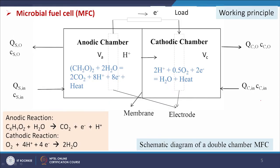First we will discuss microbial fuel cells. This diagram shows the working of the microbial fuel cell. The organic-containing wastewater enters into the cell containing two electrodes — anode and cathode — and these two chambers are connected with a membrane. This membrane allows hydrogen plus ions to transfer selectively. We have some organic compound and organic-containing wastewater with microbes present in it.